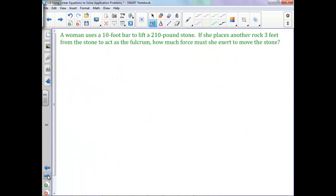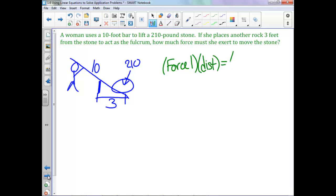And now a fulcrum problem. We have a woman that's using a bar with a stone. So we've got a stone, we've got a woman, and we're using some sort of bar. We know the bar is ten feet, we know the stone is 210 pounds, and we're using a fulcrum right here at three feet away from the stone. We're using this to lift. And so our key formula here that we're going to be using is our force of one of them times that distance to the fulcrum. That's got to equal out the force of the second one times the distance of that second one. Because to lift it, we've got to have those equal.